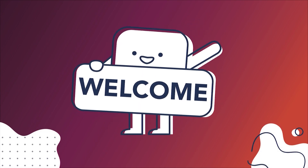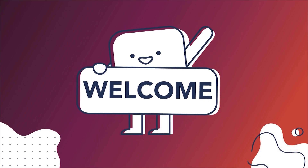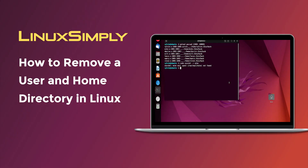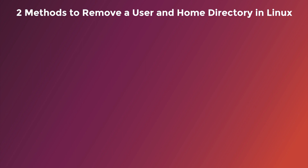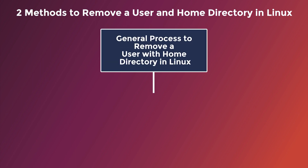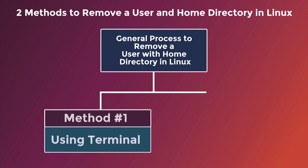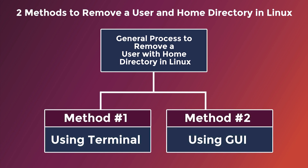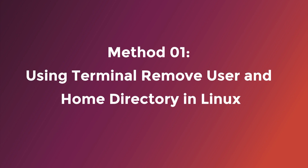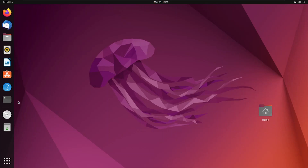Hello viewers, welcome to Linux Simply. In this video I'm going to show you how to remove a user and the home directory in Linux. There are two methods to remove a user and home directory in Linux: the first one is using the terminal and the second one is using the GUI. I'm going to start with method one, which is using the terminal, and for this I'm going to open the Ubuntu terminal.